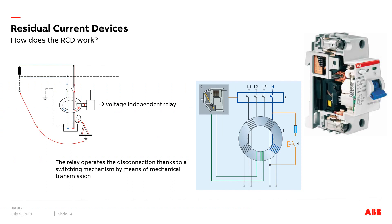The vectorial sum of all currents in the three phases and the neutral is always zero. In case of an earth fault — for example, if someone touches a live conductor — a part of the current bypasses the toroidal core and the sum is no longer zero. Then, in the green secondary winding, a small current will be induced, which trips the voltage-independent relay and consequently the RCCB. The test button circuit of the four-pole RCCB F200 series, regardless of rating, is wired inside the device between terminals 5/6 and 7/8, which are L3 and N.